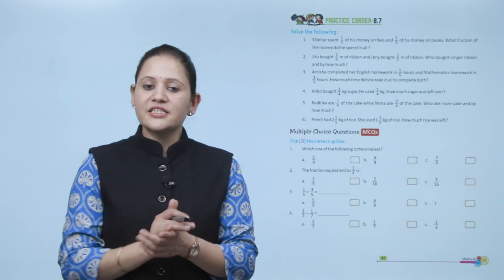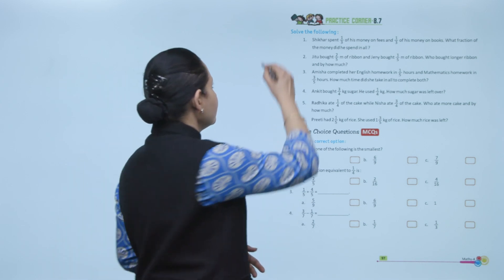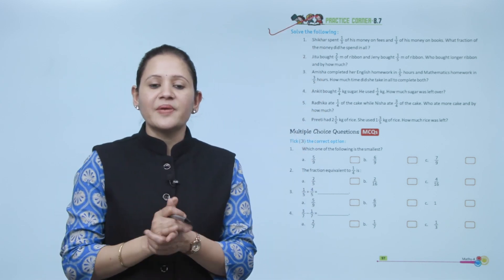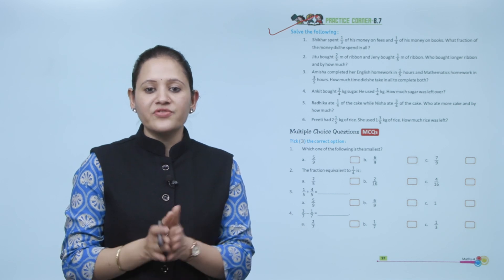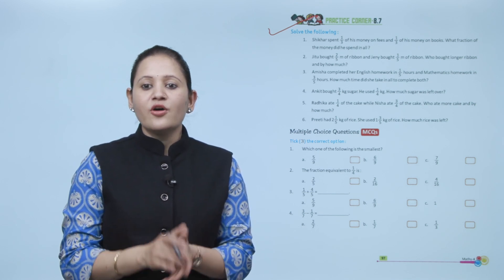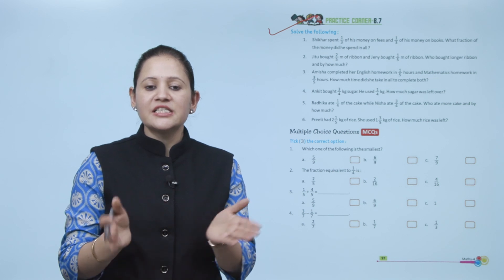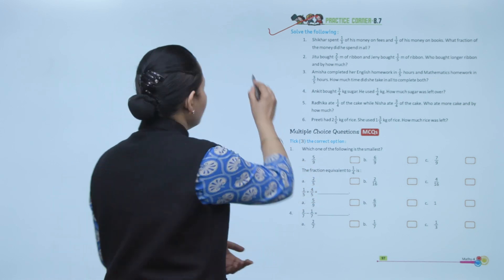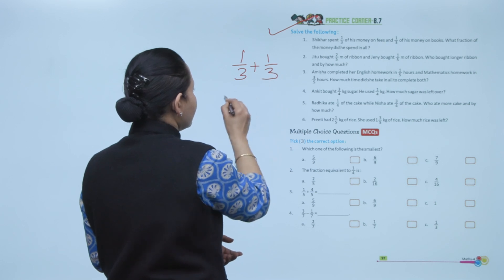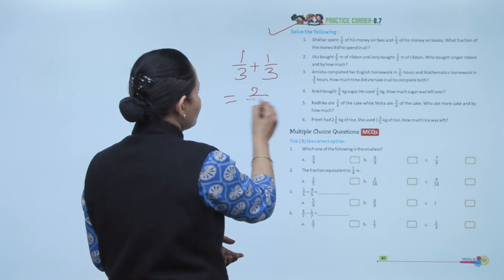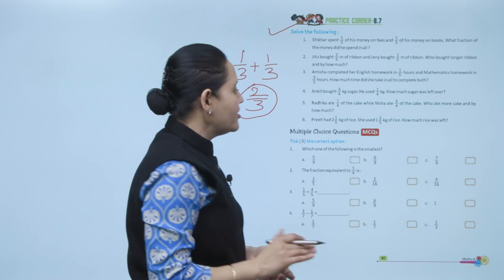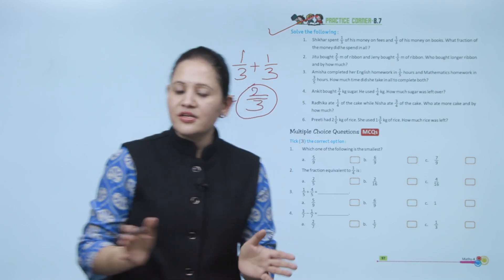Practice corner 8.7: Shikhar spent 1 by 3 of his money on fees and 1 by 3 on books. What fraction of money did he spend in all? Add 1 by 3 plus 1 by 3 equals 2 by 3. So he spent 2 by 3 of his money in all. Practice all the questions of this exercise.